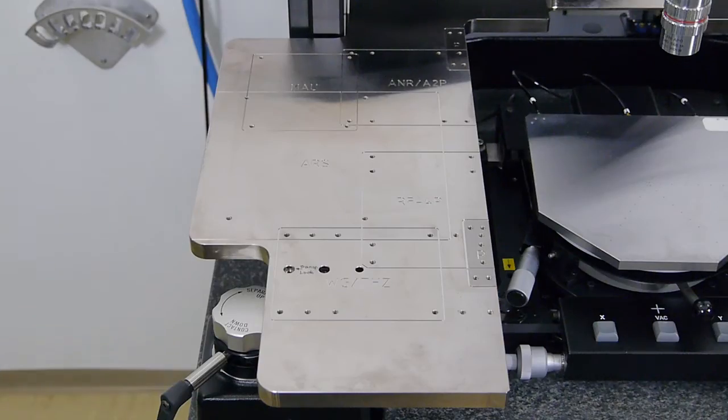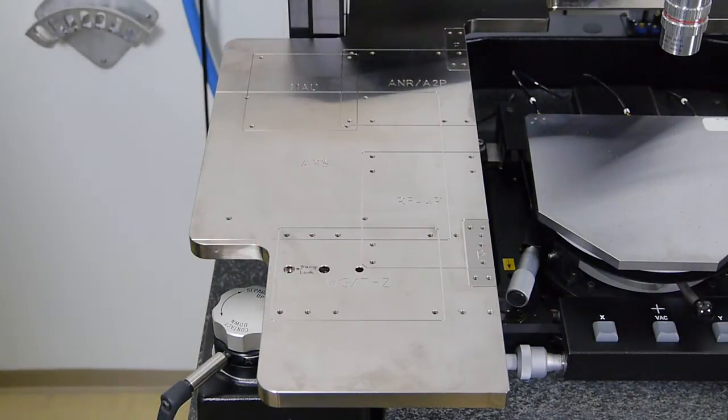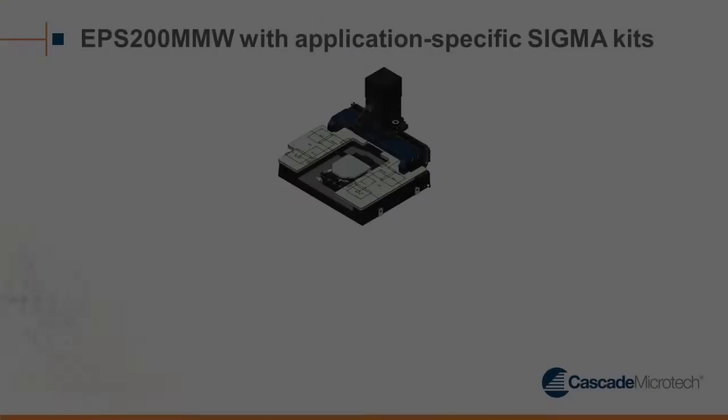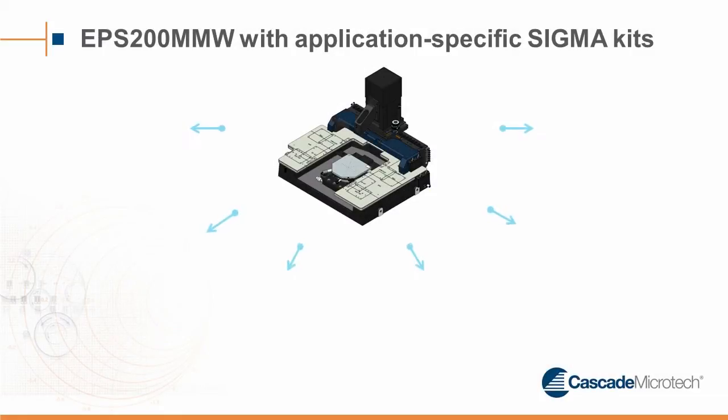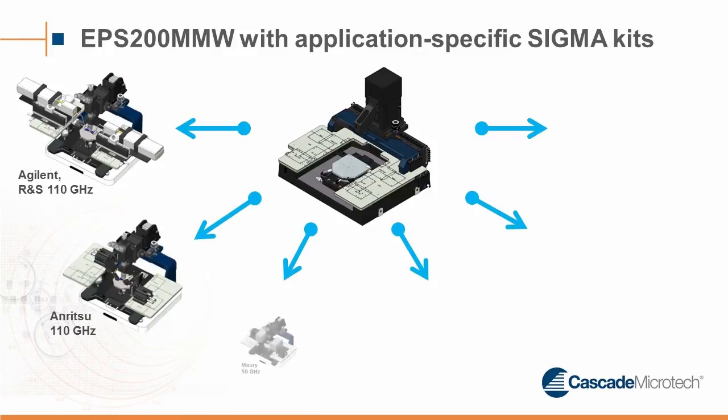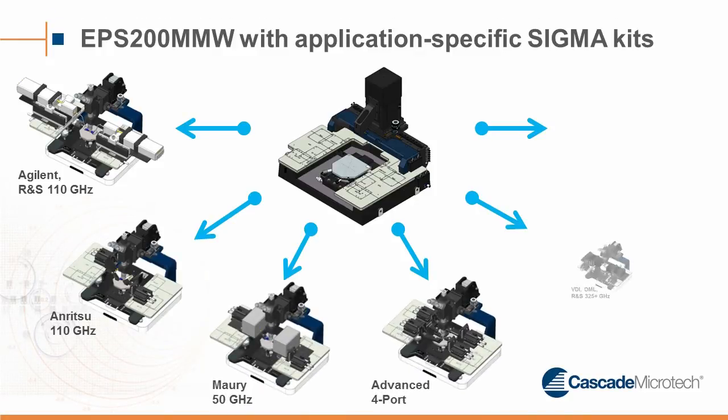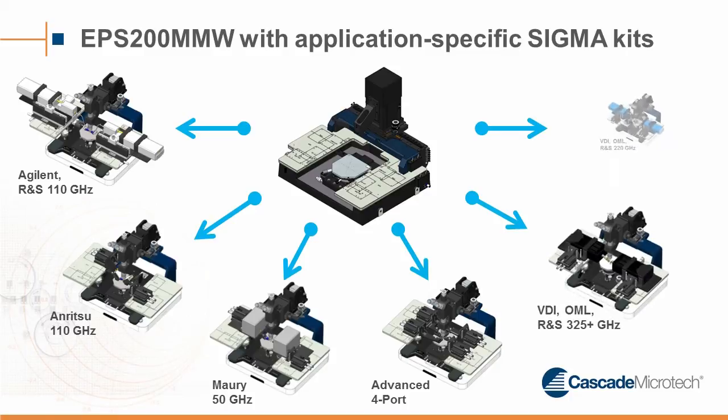For holding the various Sigma kits, the platen has several mount points for various integration solutions. Basically, such a Sigma kit is the glue between the probe station and the measurement instrumentation integration. So for various setups, we offer various different Sigma kits. Ideally, you would have a dedicated integration kit for each of your setups.